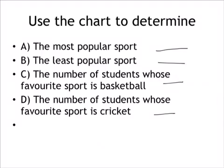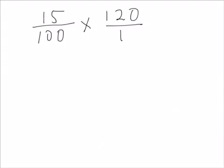We are now going to work on each individual sport to see the actual number that chose that sport. Let's start with cricket. Now remember 15% chose cricket. Now there was 120 students. So to work out the actual number we say 15 over 100 because percentage is always over 100 times 120 over 1.